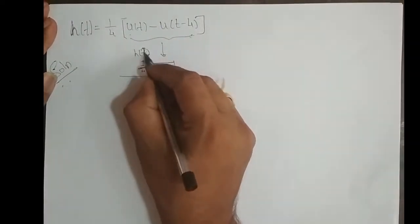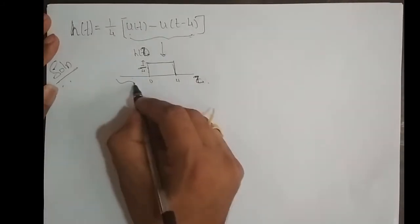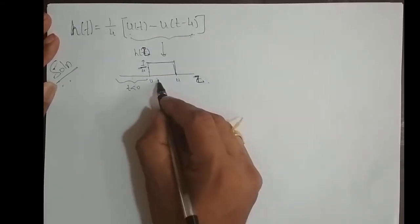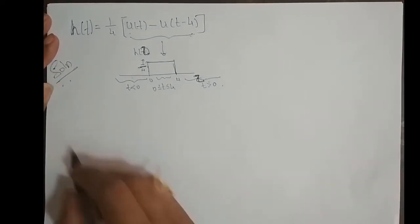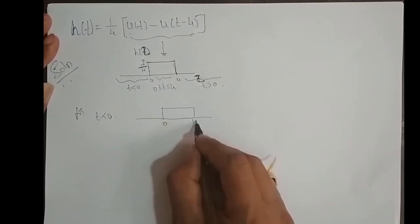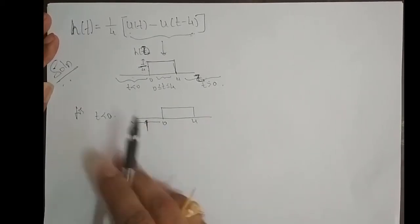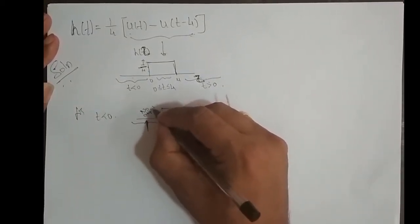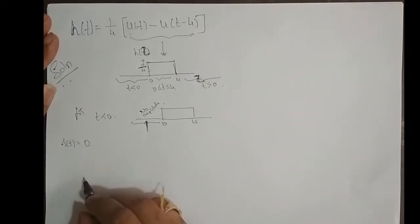We replace the independent variable from t to tau. This has three regions: t less than 0, t between 0 and 4, and t greater than 4. For t less than 0, do we have any running sum? From minus infinity until just before 0, there is no amplitude. Therefore, the step response is 0 because there is no amplitude. This is Region 1.